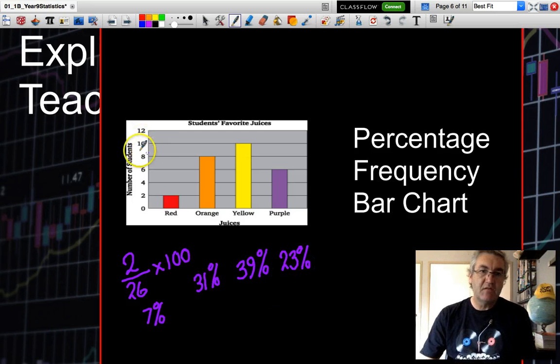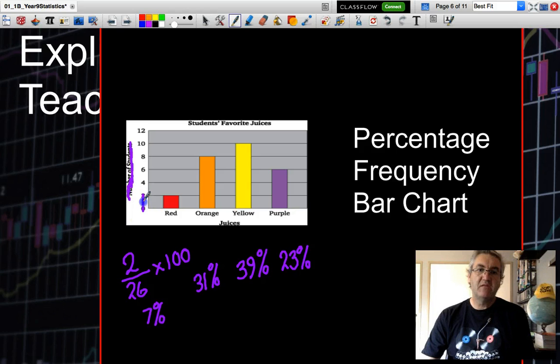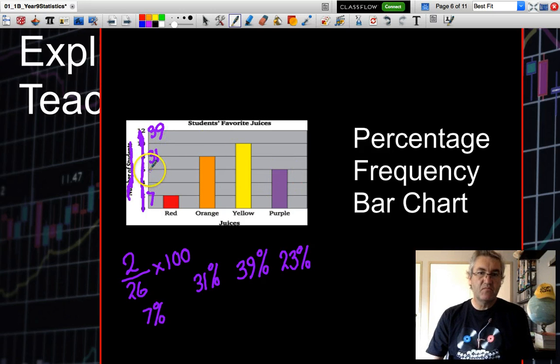So if I replaced this axis, I could actually replace this vertical axis. And instead of having absolute numbers, if I replaced those with percentages, you would find that the percentage up to here would be 7. The percentage up to here would be 31. Likewise, the percentage there would be 39, and the percentage here would be 23. Just another way to present information in a bar chart.